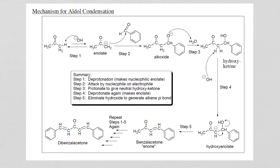Here we have the general mechanism for the formation of dibenzyl acetone. This mechanism falls under an umbrella called the aldol condensations. For that, we will need a species — in our case our acetone — that will have our alpha hydrogens.